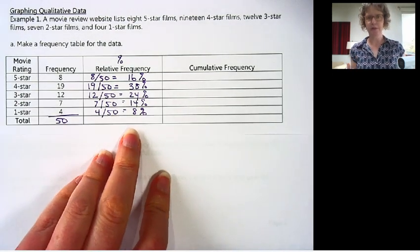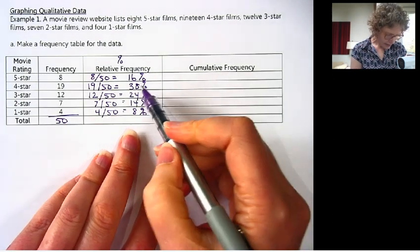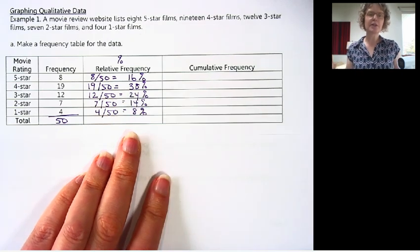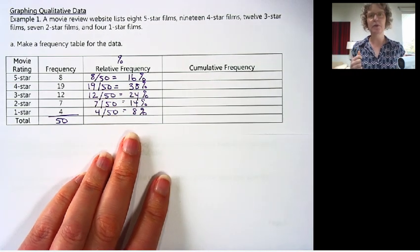That is our relative frequency. And that, now it's a little easier to understand. Okay, 38% of the films were 4 star films.